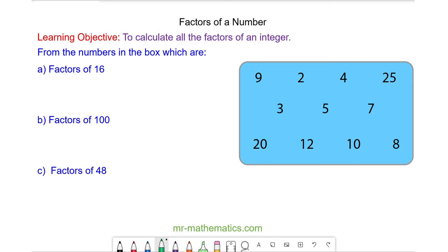OK for question A. We know 16 is even so it must be 2. And 4 is 4 times 4 to make 16. And 8 is 8 times 2. So the factors of 16 are 2, 4 and 8.